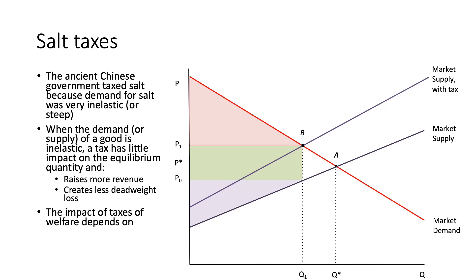The impact of taxes on welfare depends on a couple of different things. The first is the size of the deadweight loss — a significant deadweight loss has a larger impact on the welfare of consumers and producers. Welfare also depends on how the tax revenue is spent. If the revenue is reallocated back to consumers or producers, we can justify implementing a tax that may be creating a larger amount of deadweight loss.